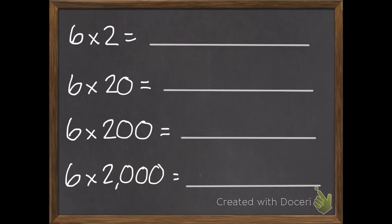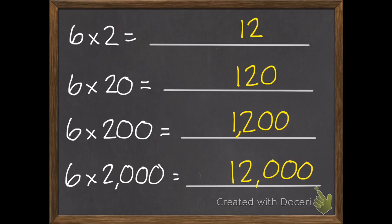Okay, six times two is twelve. Six times twenty is one hundred twenty. Six times two hundred is one thousand two hundred. And six times two thousand is twelve thousand.